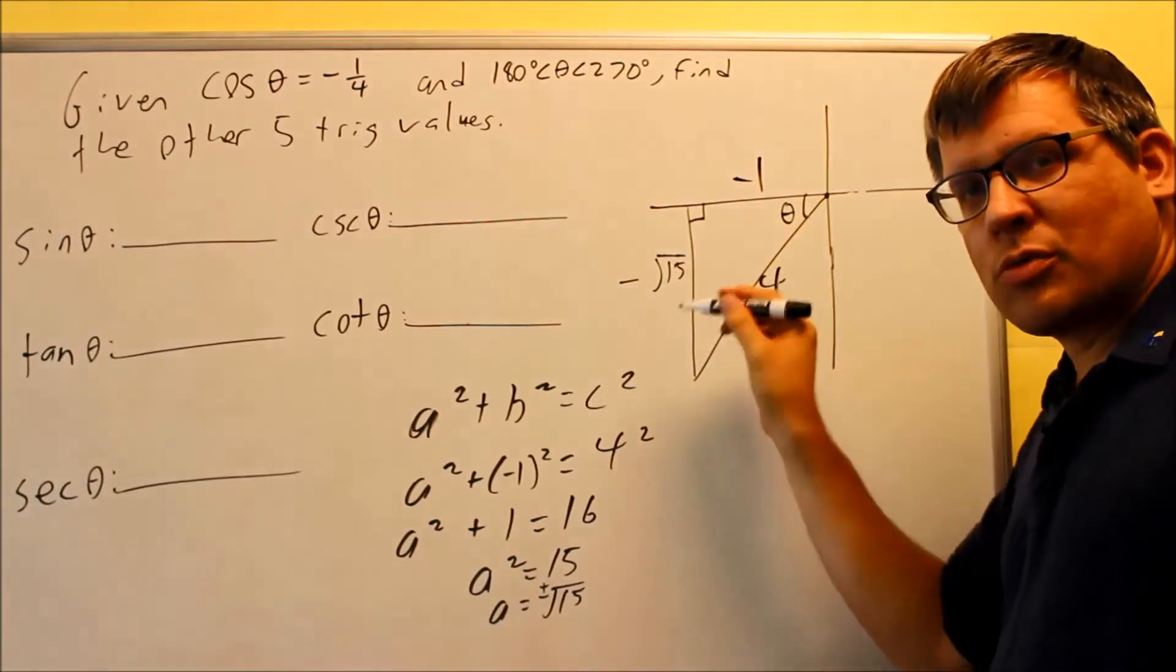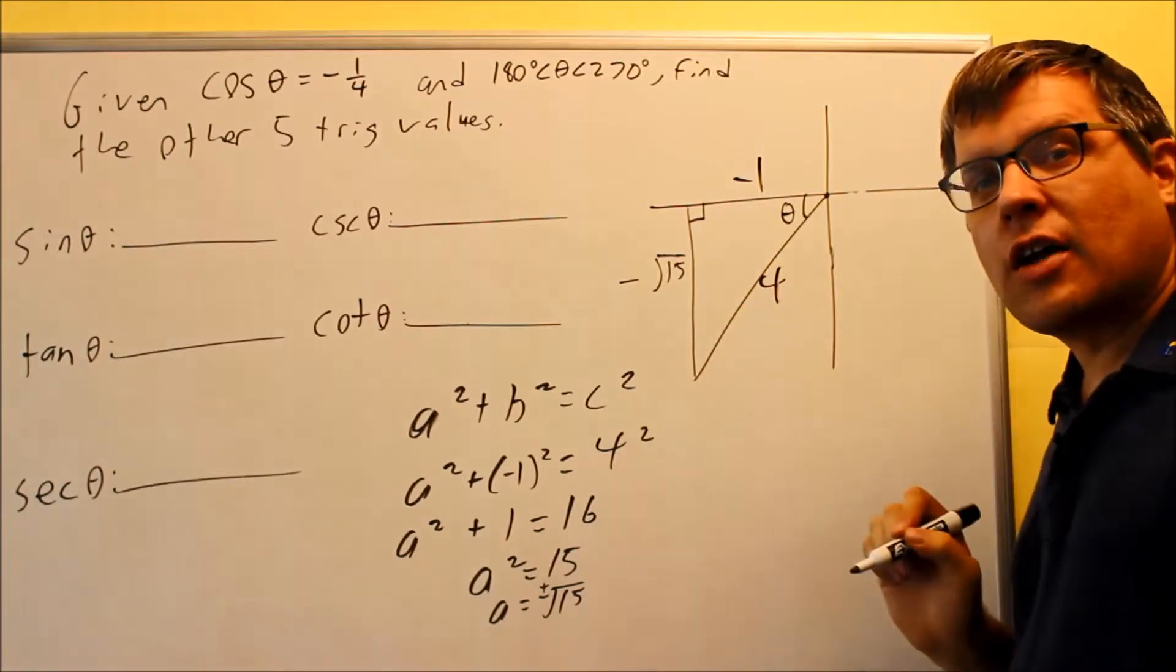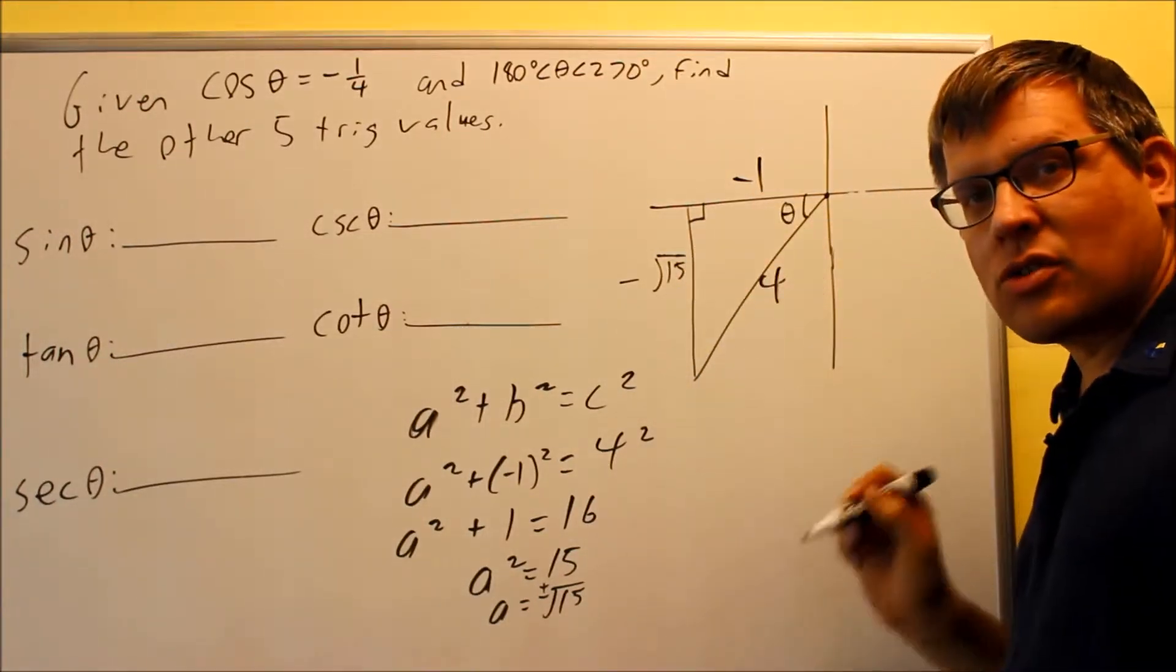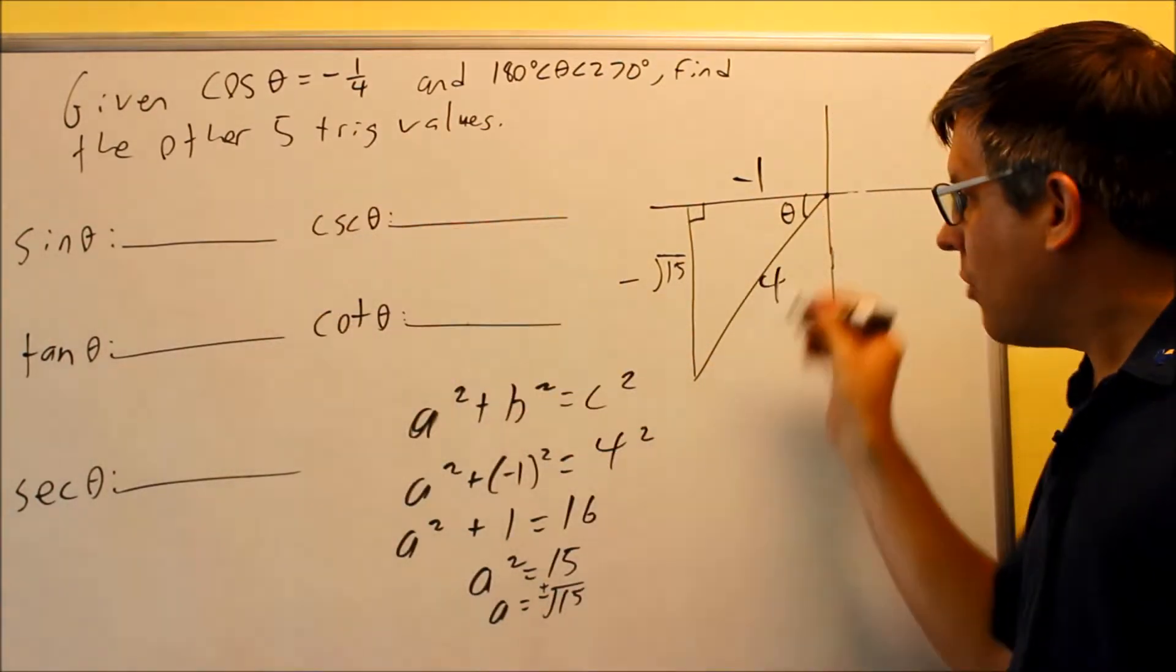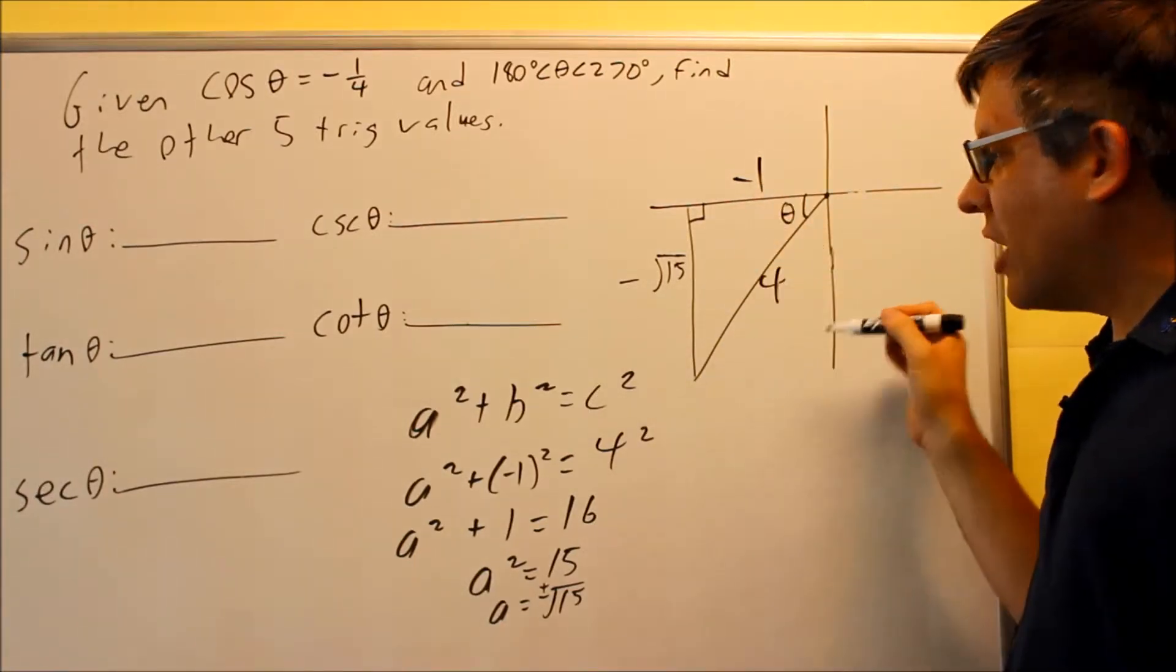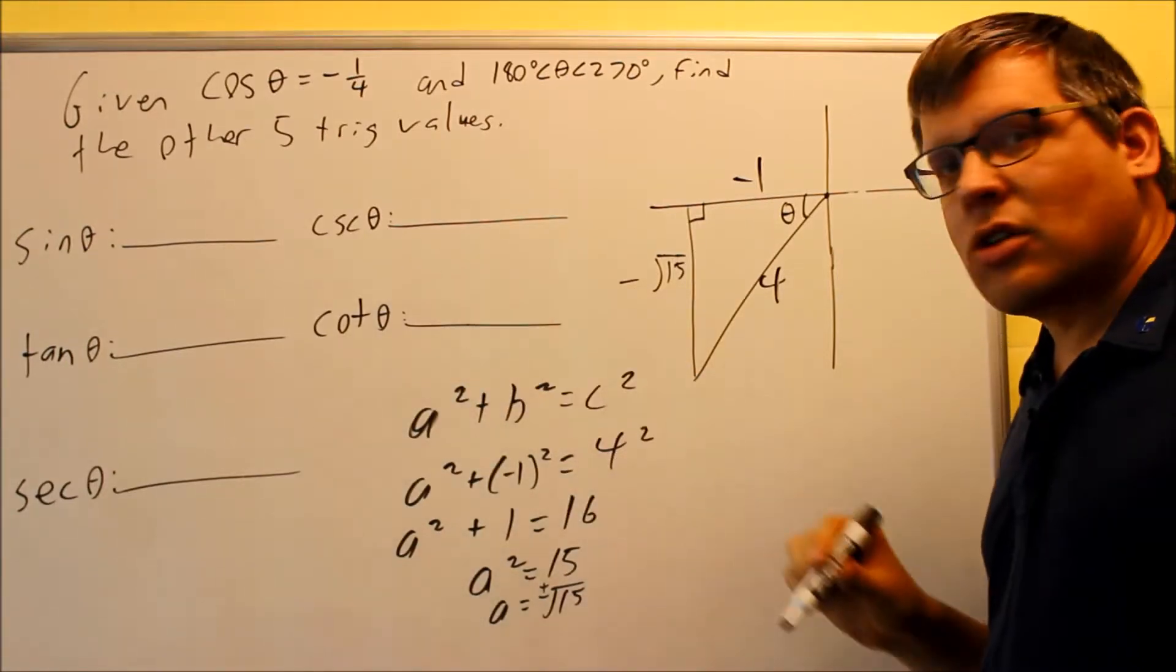This is really, really important, probably the most important thing, this is where people make the most mistakes, is forgetting to put a minus sign there. It has to be a negative because it's below the x-axis. It's really important that you get the signs correct on this, otherwise the rest of these are going to be wrong based on your picture, so the picture needs to be correct. Now that we have all the sides labeled correctly with a negative here and a negative there, we're ready now to answer the rest of the questions.